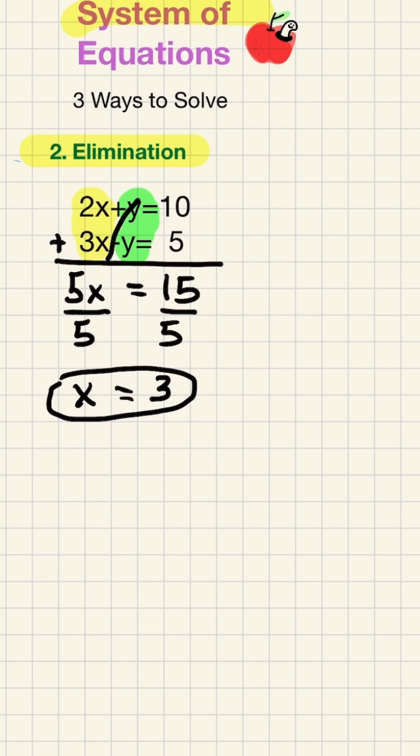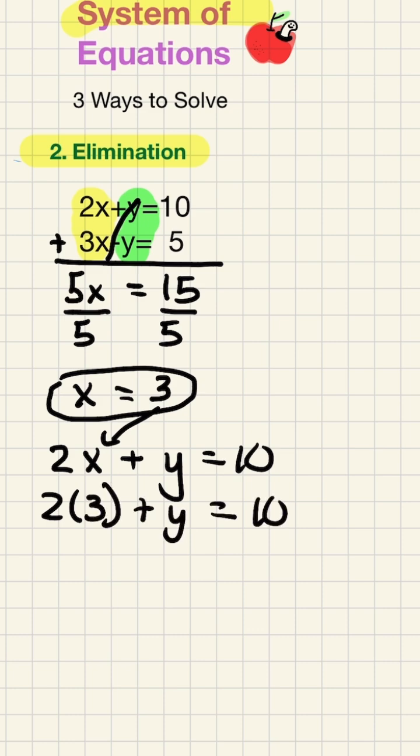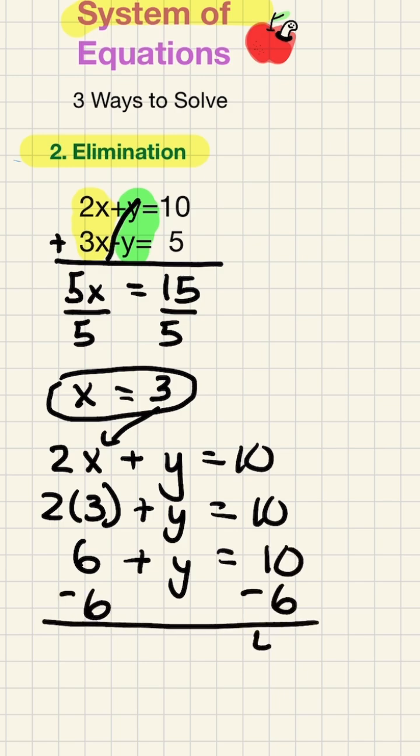Let's plug x equals 3 into our equation again. Remember our original equation was 2x plus y equals 10. We're going to substitute x for 3. Now we have 2 times 3 plus y equals 10. 2 times 3 is 6 plus y equals 10. Subtract 6 from both sides of the equation. We're left with y, which equals 4.